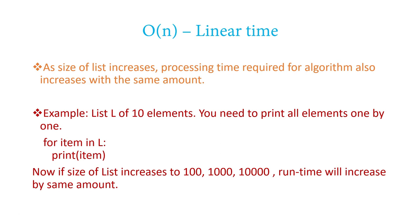Next is order of N, Big O of N — also known as linear time. Consider the example: you have a list of 10 elements and you need to print all elements one by one. In Python you write: for item in L, print item. Now if you increase the size of the list to 100 elements, this loop prints 100 times. Increase it to 1,000 — time required also increases by the same amount. If you move to 10,000 elements, this loop runs 10,000 times. The run time is increasing by the same amount as the input is increasing. A single loop over a list where you process each element is the classic example of linear time.